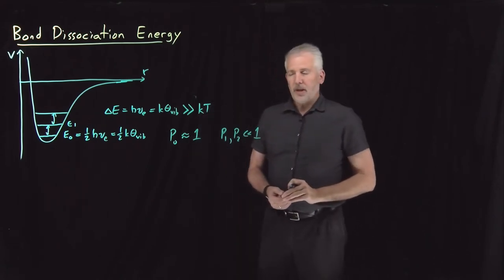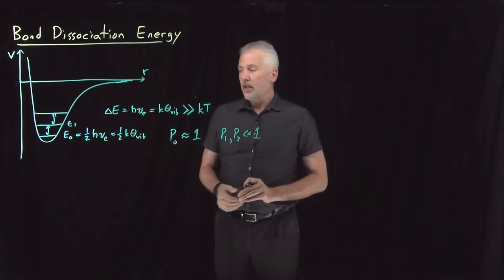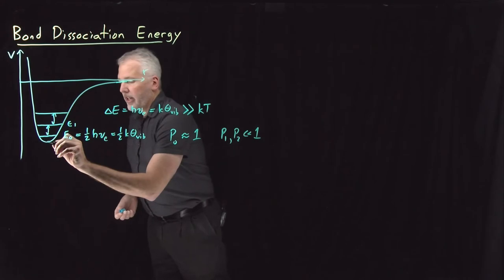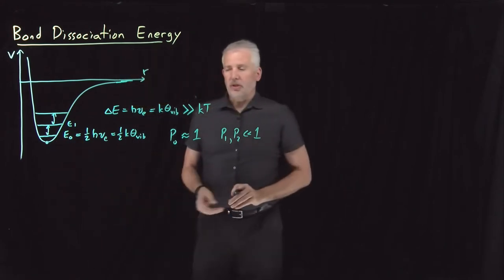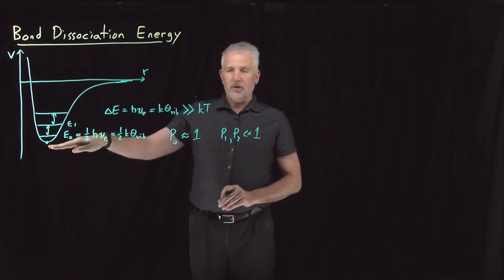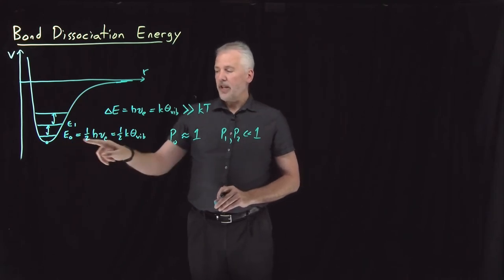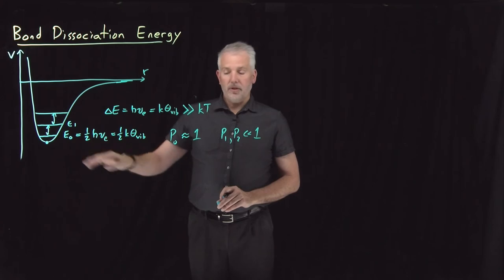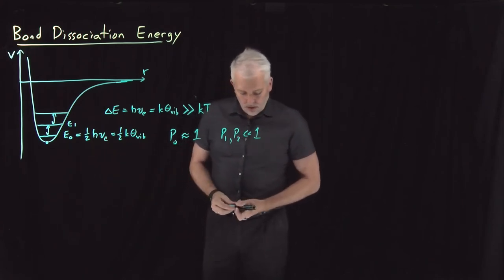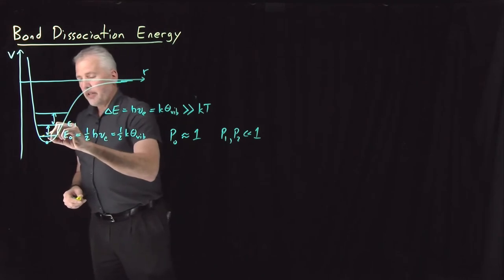When we think about how much energy it takes to dissociate a molecule, to break the bond, the molecule never has this much potential energy. It can never sit at the very bottom of the well. The zero point energy of the molecule will lift it up above the bottom of the well. Most of the molecules, the overwhelming majority of diatomic covalently bonded molecules, have an energy of one-half H nu above the ground state.